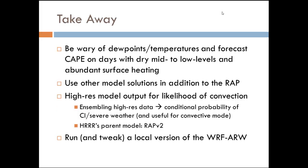A few takeaway points: always be wary of temperatures and dewpoints from model forecasts, but especially on days where you've got really dry mid-to-low levels and abundant surface heating — any time you're getting into that classic high-plains environment. Using other model solutions will really help because they all have different PBL schemes and are probably going to handle this a little differently. There are also a lot of other options for the probability of convection — high-res model output, even ensembling the high-res data to look at the conditional probability of convective initiation. How often are those high-res models producing convection is starting to be used as your probability of severe weather, in addition to values like CAPE and model soundings.